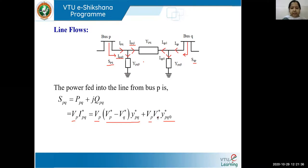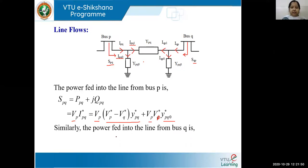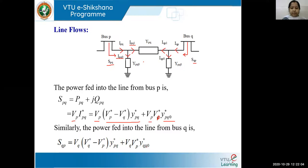In the SPQ expression, the VP conjugate term multiplied by YPQ conjugate zero appears. Similarly, the power fed into the line from bus Q is written in the same format from the other direction: VQ, VP conjugate, YPQ zero.